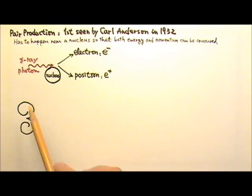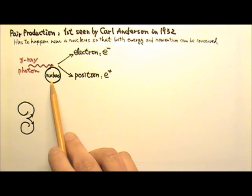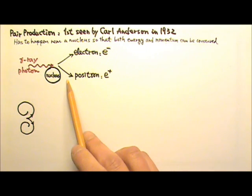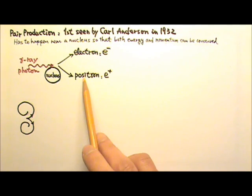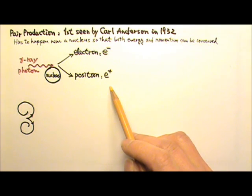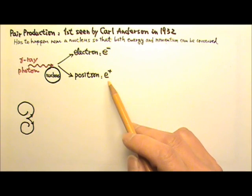It turns out that a high energy gamma ray photon near an atomic nucleus can disappear and produce a pair of particles, an electron and a positron. A positron is just like an electron. They have the same mass, the same amount, but opposite charges.